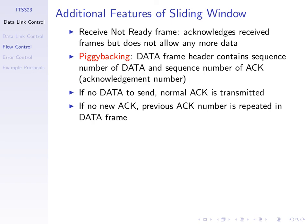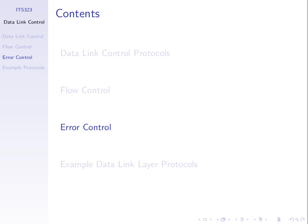That's all to say about sliding window. Now we move on to error control. Up until now everything has been perfect — we send data and it gets to the destination. The next issue is what happens when we send data and something goes wrong. Error control protocols go through three basic mechanisms: the first is based on stop-and-wait, and the second two are extensions of sliding window.